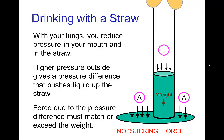A similar thing happens when you drink through a straw. You use your lungs to reduce the pressure inside the straw, while outside the pressure is normal atmospheric pressure. So we have a pressure difference — that pressure difference pushes down on the liquid outside the straw and draws liquid up the straw.